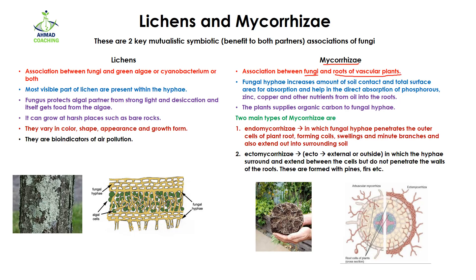The next symbiotic association is mycorrhiza. Mycorrhiza is an association between fungi and the roots of vascular plants, such as pea plants or nodular plants. In this association, the fungal hyphae increase the amount of soil contact and the total surface area for absorption by penetrating their hyphae into the soil, helping in the direct absorption of phosphorus, zinc, copper, and other nutrients into the roots.